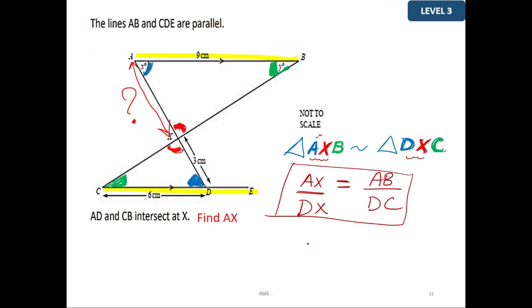So AX is going to be 9 multiplied by 3 over 6, which equals 4.5 cm. So your answer is AX equals 4.5 cm.